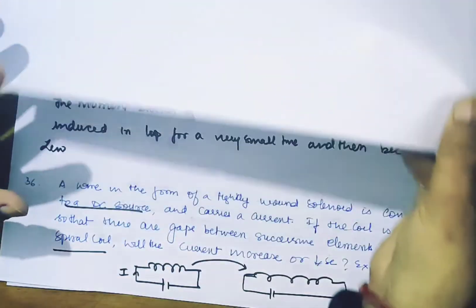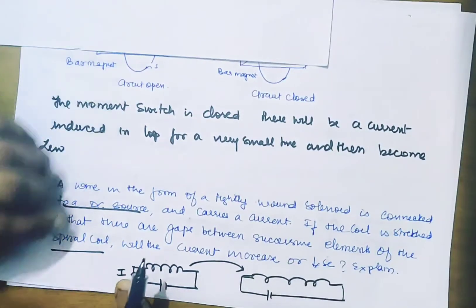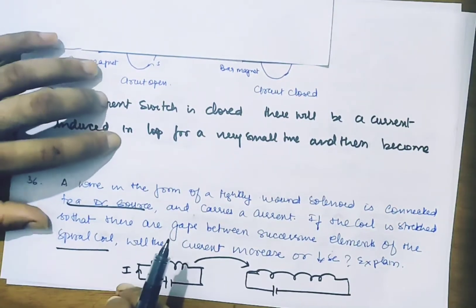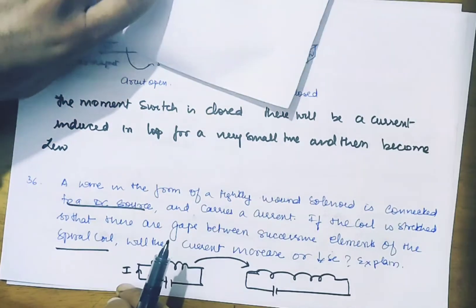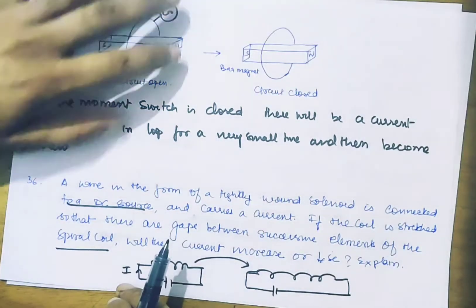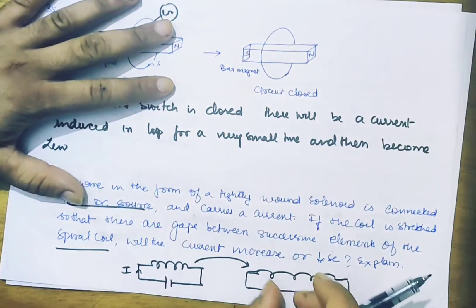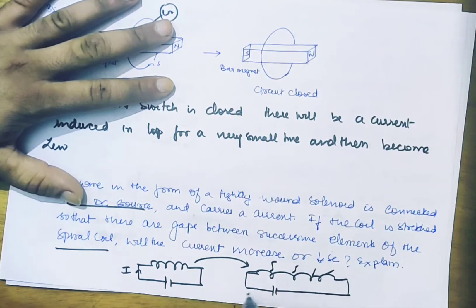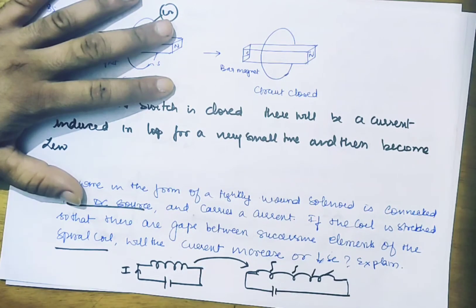Even though the current was steady and not changing, if you change the gap in the coil, then the flux will leak. And when the flux leaks, according to Lenz's law, there will be a response to oppose that change.